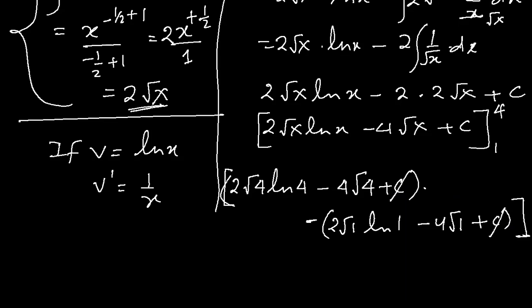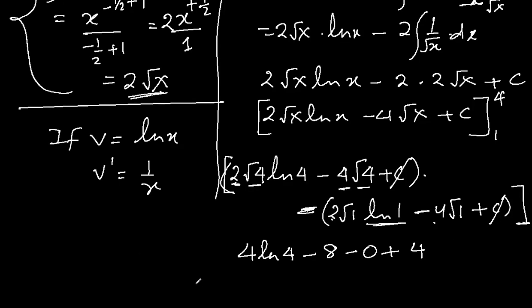First thing, c is cancelled. So 2 square root 4 is 2, so 2 times 2 is 4, ln 4 minus 4 times 2 will be 8. And c is not there, now this minus, 2 times square root 1 will be 2, and ln 1, ln log of 1 is always 0, no matter what is the base, so 0. This negative and this negative will be positive, 4 times 1, square root 1, 4, positive 4, and nothing else. So finally it will be 4 ln 4 minus 4 minus 4, so we can take 4 common, ln 4 minus 1, that is the solution of this question.